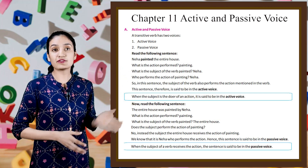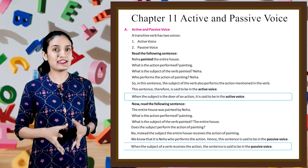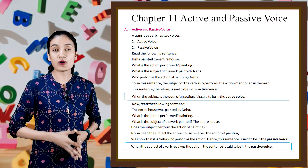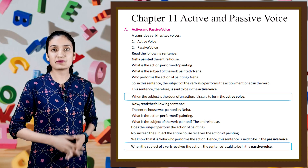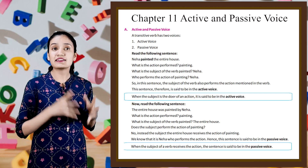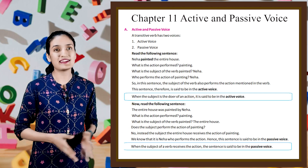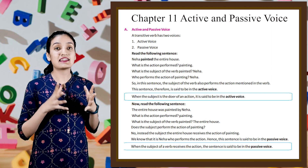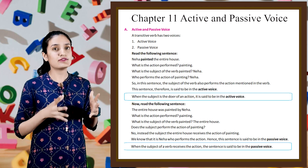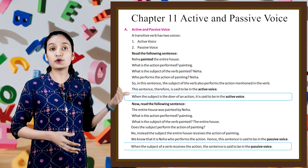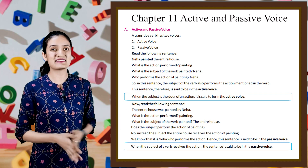Now students, read the following sentences. The entire house was painted by Neha. What is the action performed? Painting. What is the subject of the verb 'painted'? The entire house. Does the subject perform the action of painting? No. Instead, the subject — the entire house — receives the action of painting. We know that it is Neha who performs the action. Hence, this sentence is said to be in the passive voice.